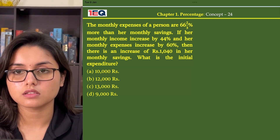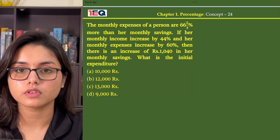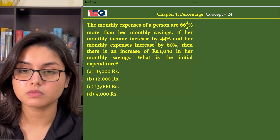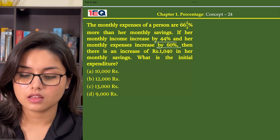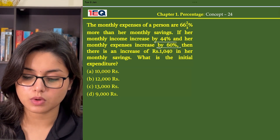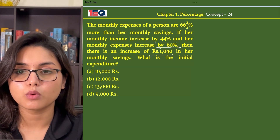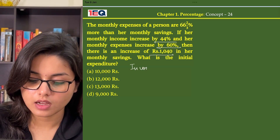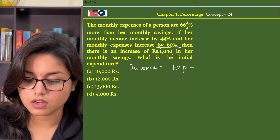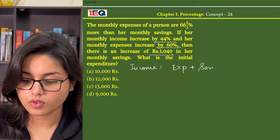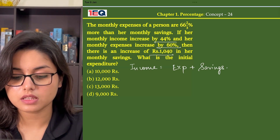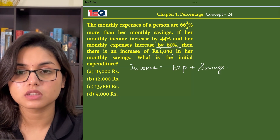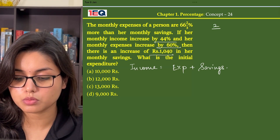The monthly expenses of a person are 66⅔% more than her monthly savings. If her monthly income increases by 44% and her monthly expenses increase by 60%, then there is an increase of Rs. 1040 in her monthly savings. What is the initial expenditure? Note that 66⅔% is equal to 2/3.